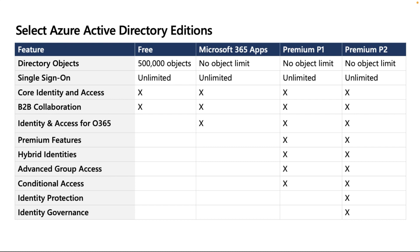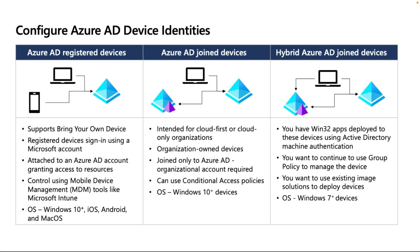For Azure AD device identity, there are three states: Azure AD Registered devices, Azure AD Joined devices, and Hybrid Azure AD Joined devices. Registered devices support Bring Your Own Device — you register your personal device using your Microsoft account, attaching it to an Azure AD account for access control using Mobile Device Management (MDM). Supported OS: Windows 10, iOS, and Android.